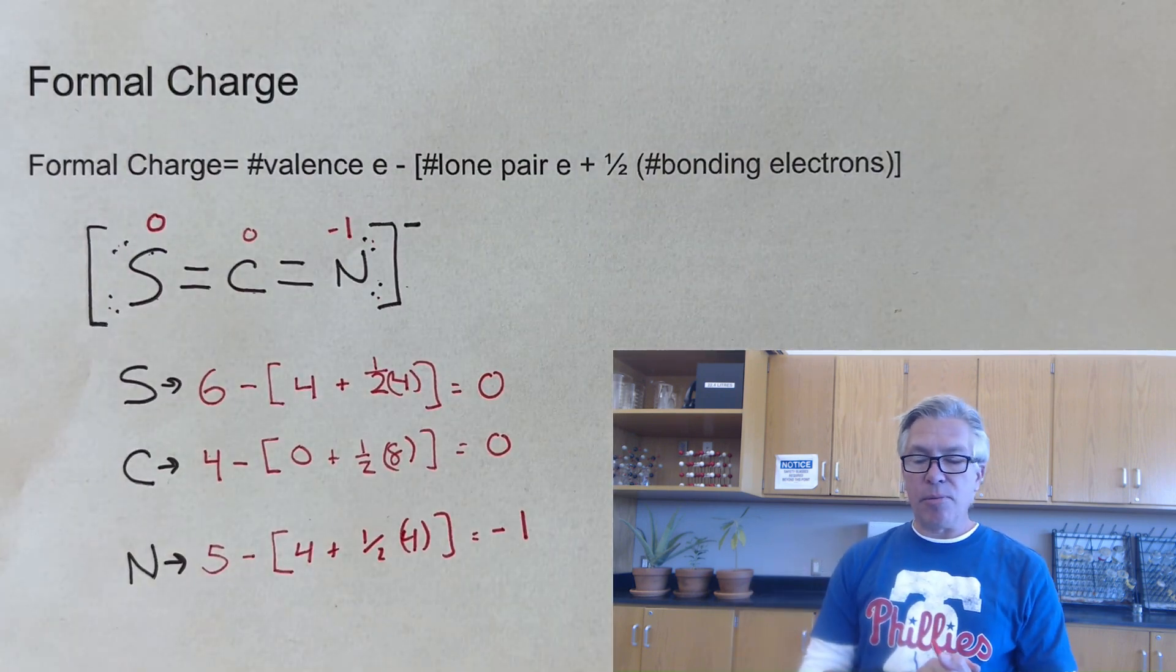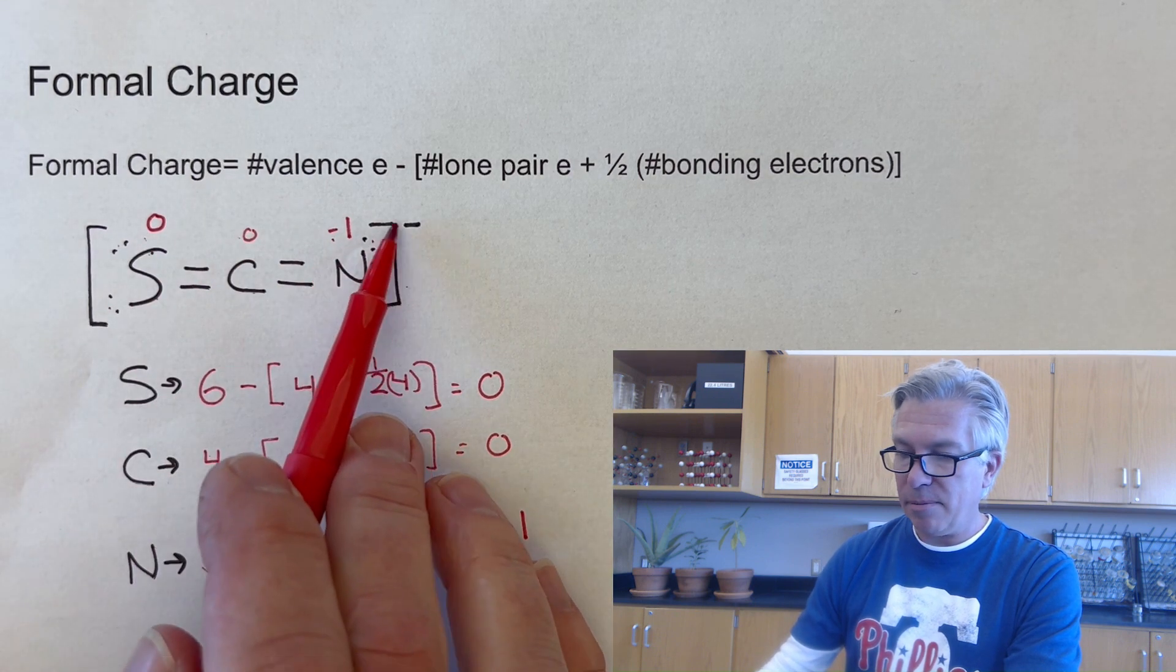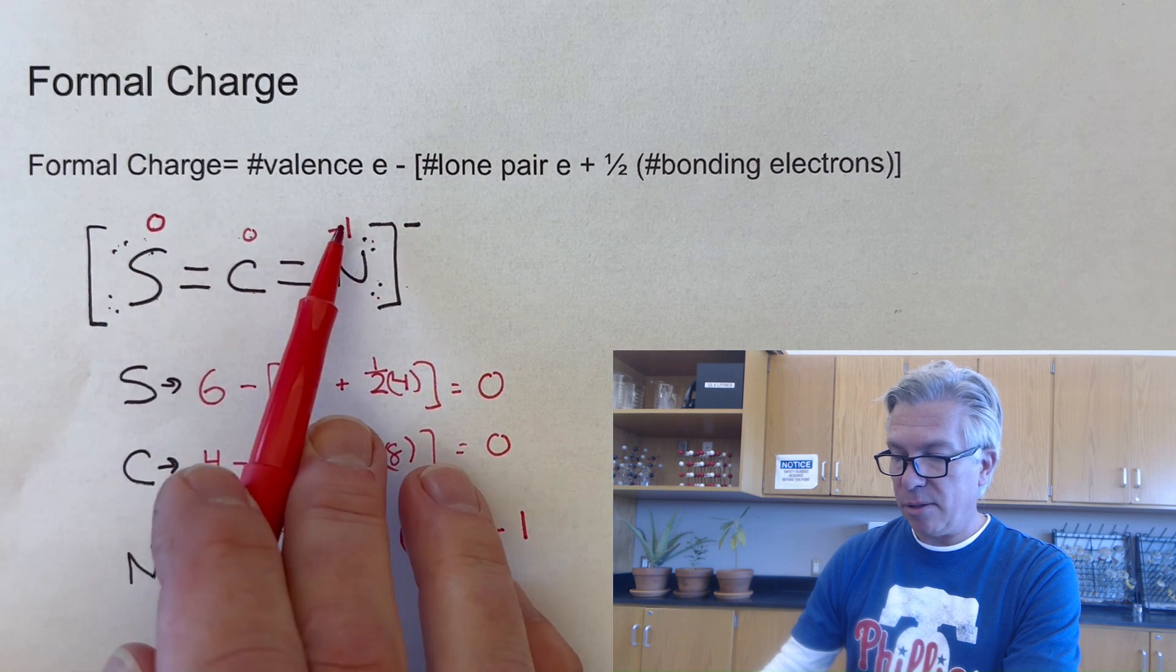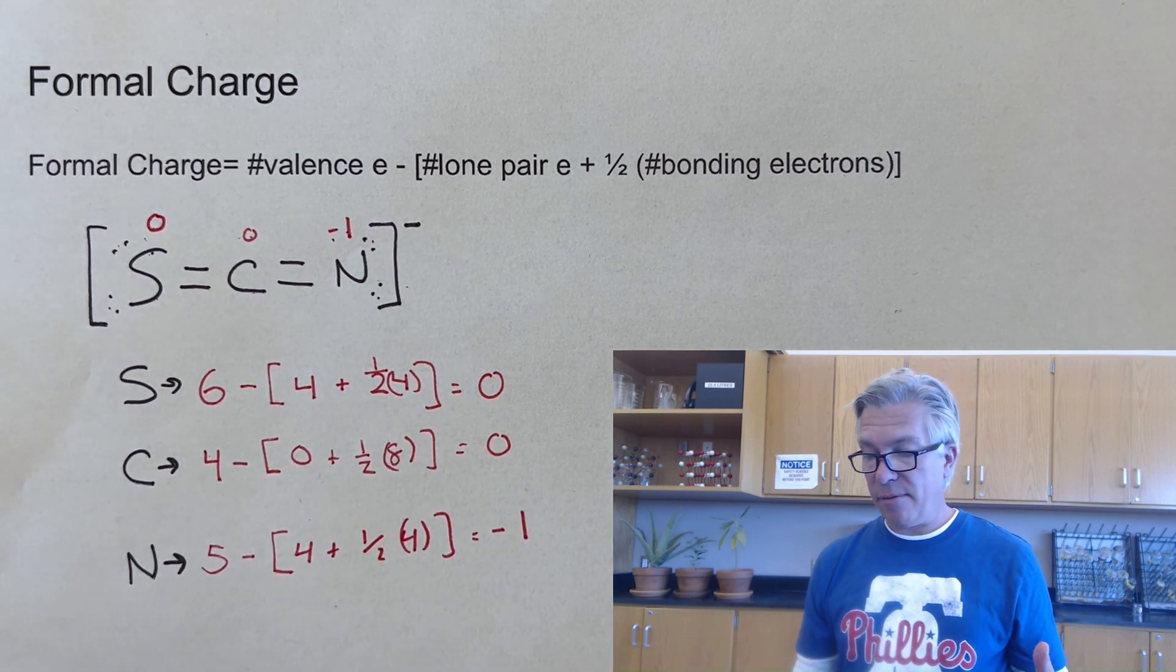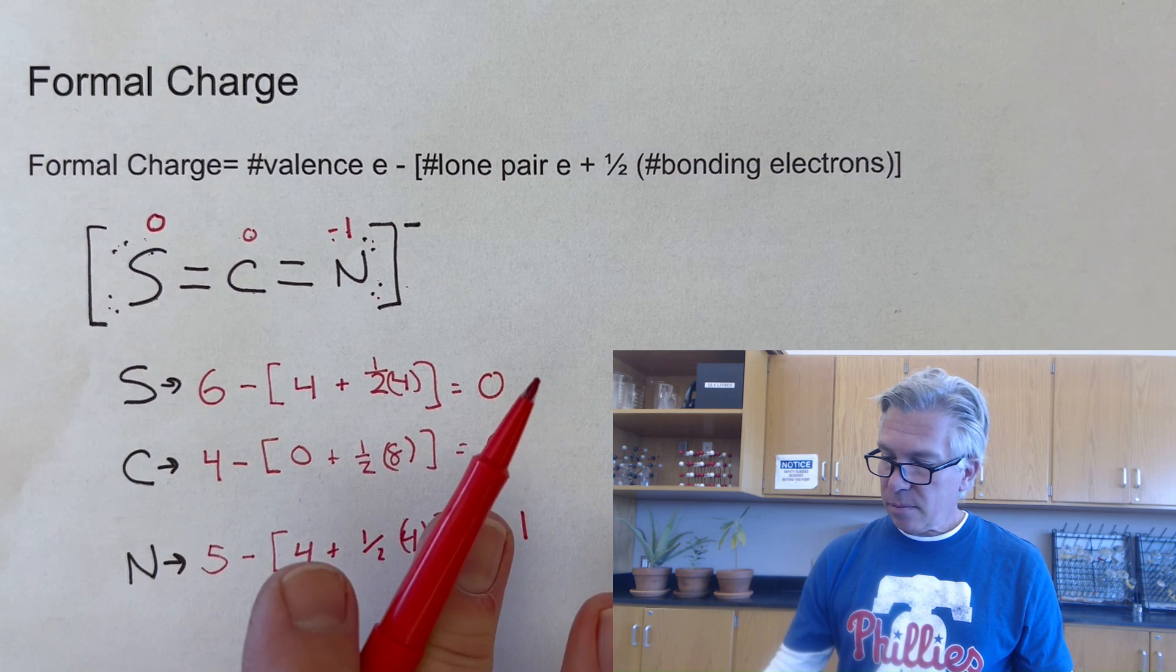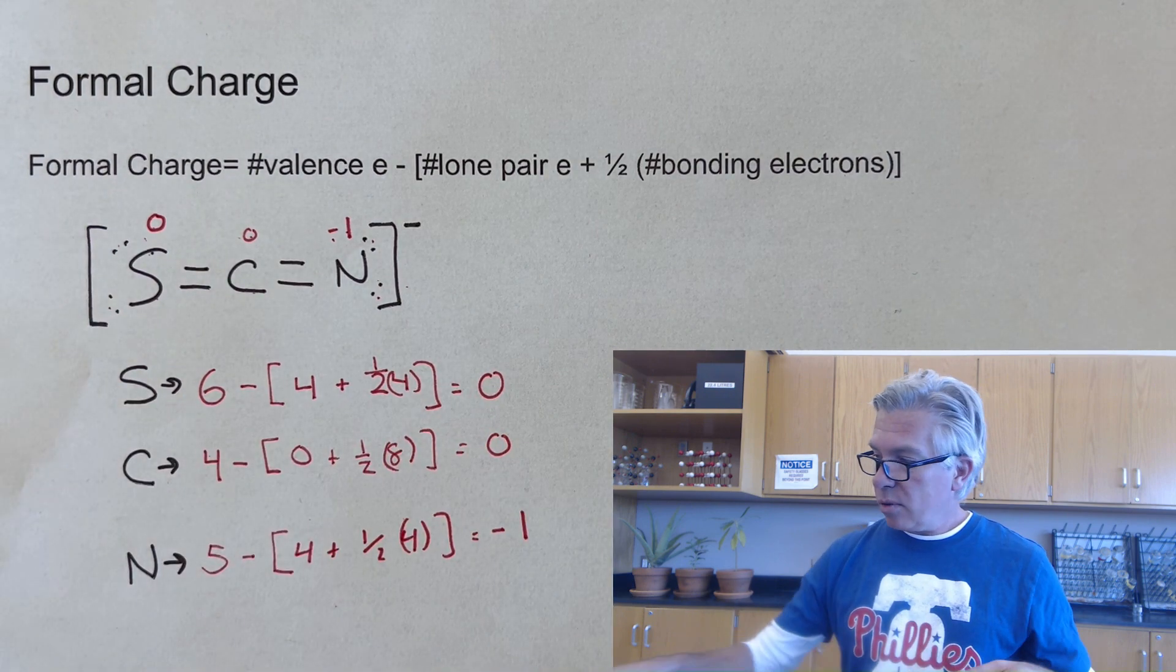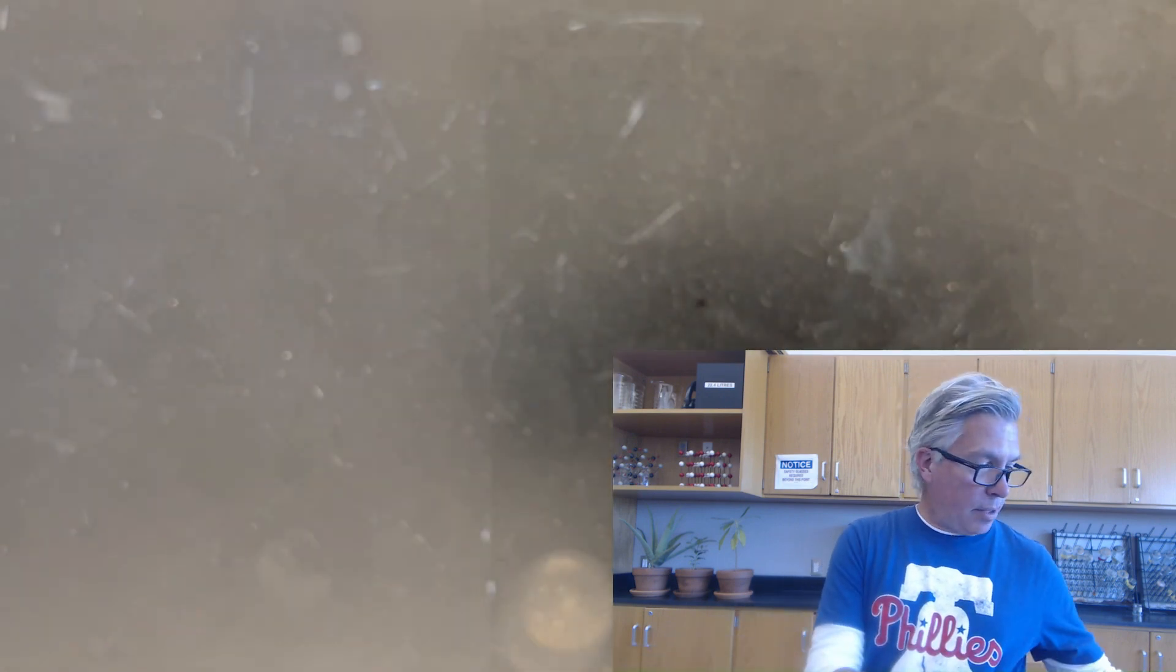One way to check that you're doing these appropriately is that the sum of the formal charges has to add up to the overall charge on your molecule. So zero plus zero plus minus one does give me the minus one overall that this ion would have. And so I can be reasonably sure that that is correct. So this is the formula. Take a moment and write it down. And then we'll go ahead and put the other ones up there.